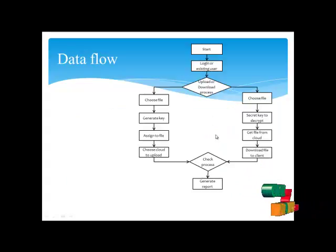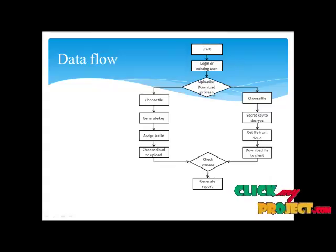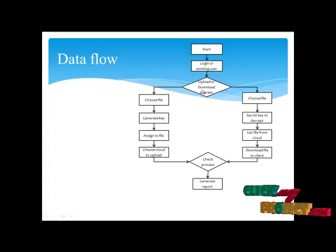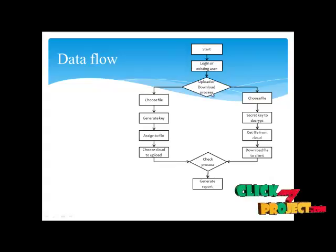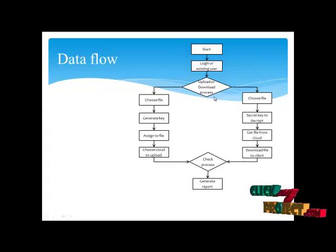Our data flow diagram. In this data flow diagram it mentions two types of processes related to cloud usage: the upload and download process. There is another process called data transmission, which covers only the upload and download process.